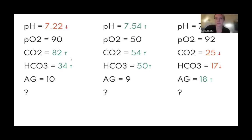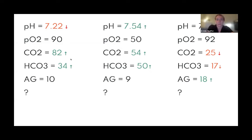Practice example 2: O2 is low — address that first. pH is 7.54 — alkalotic. CO2 is up a bit, but elevated CO2 should cause acidosis, so the pH and CO2 are not related. This is not a primary respiratory issue — it's metabolic. The bicarb is elevated, confirming alkalosis. Conclusion: primary metabolic alkalosis with incomplete respiratory compensation, since the pH is still abnormal.